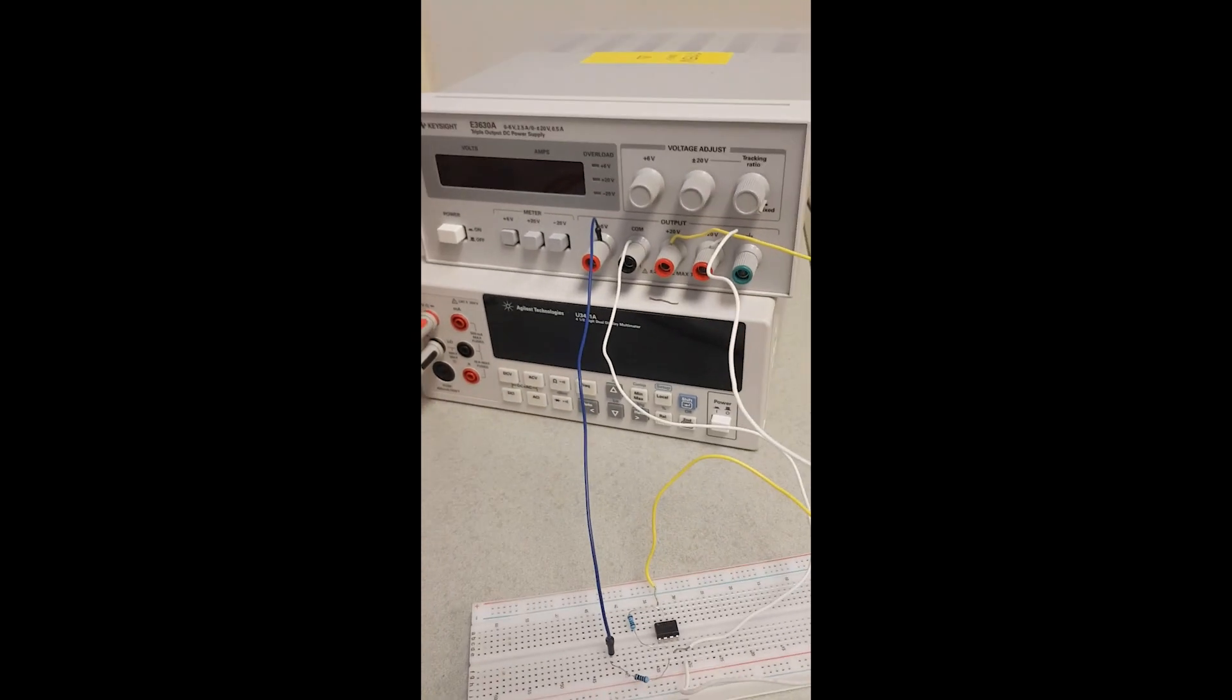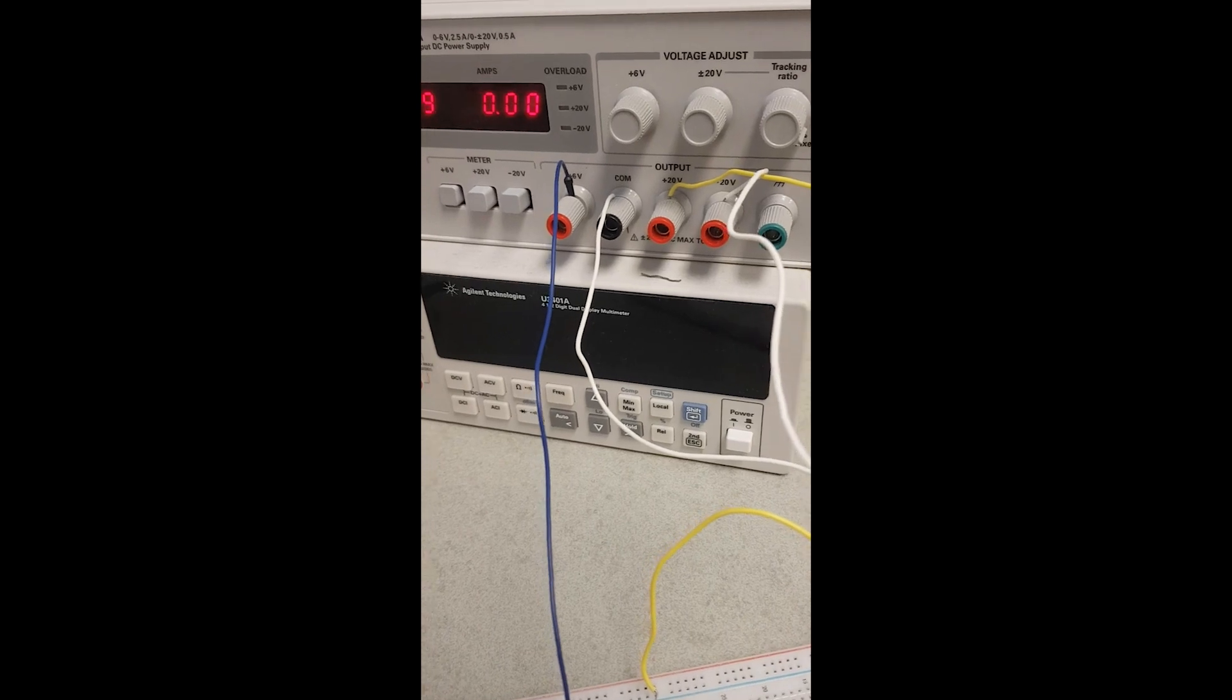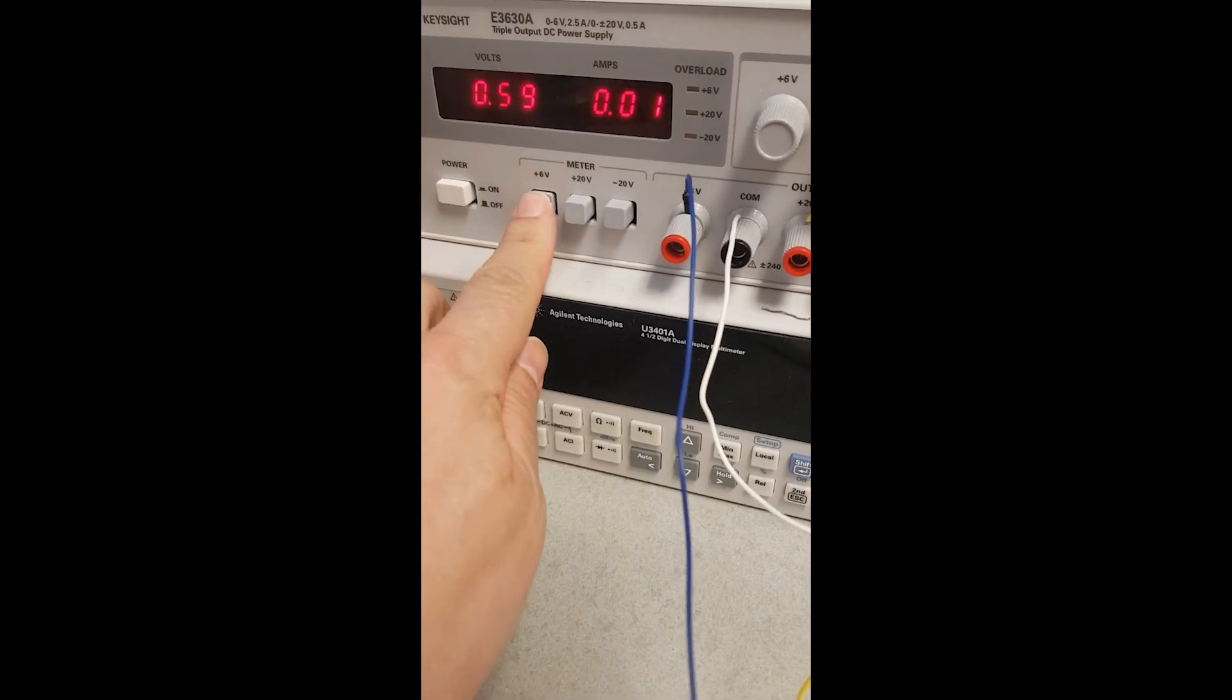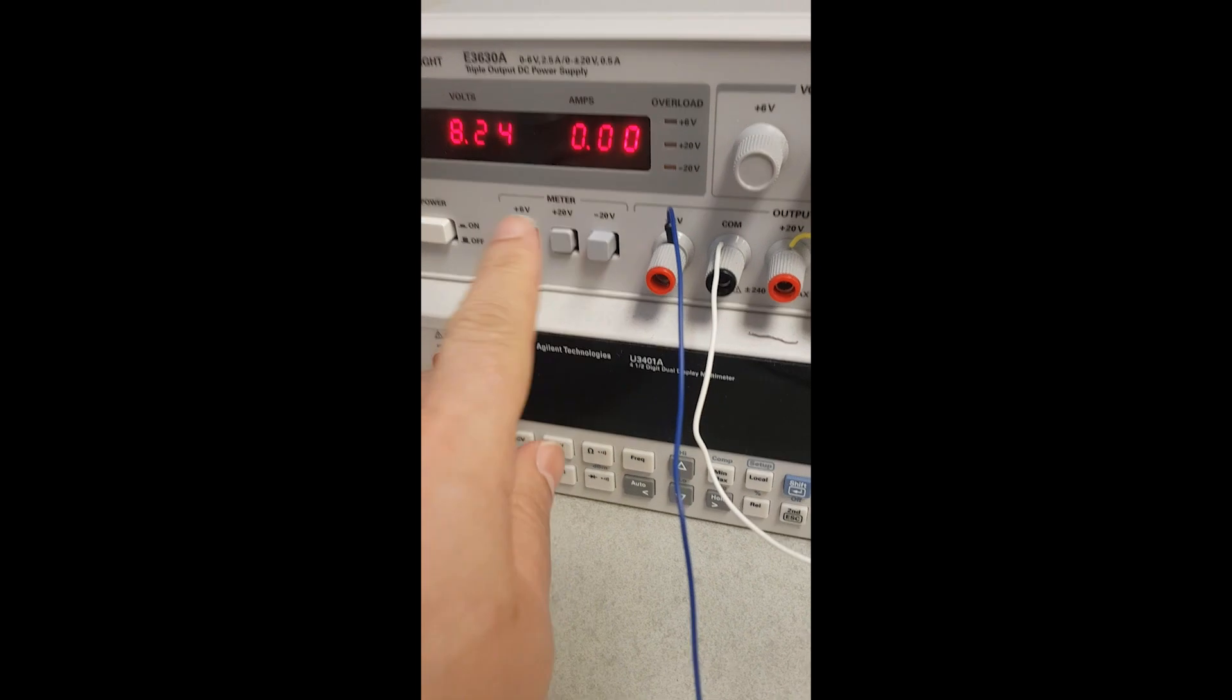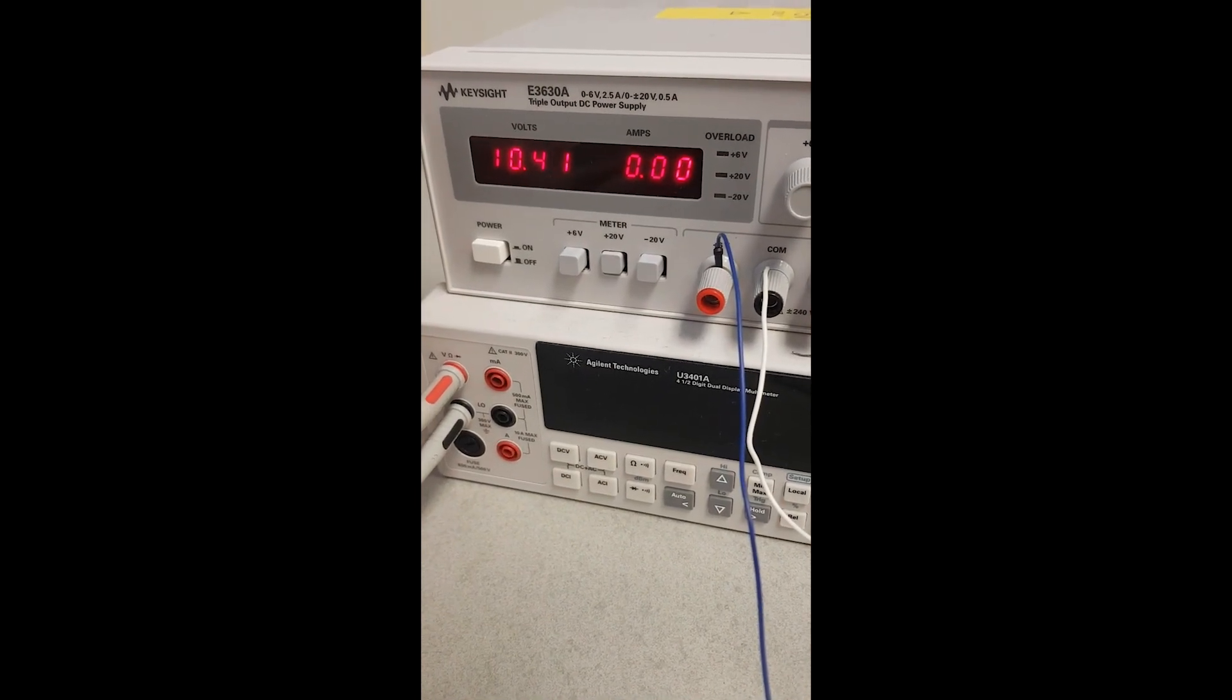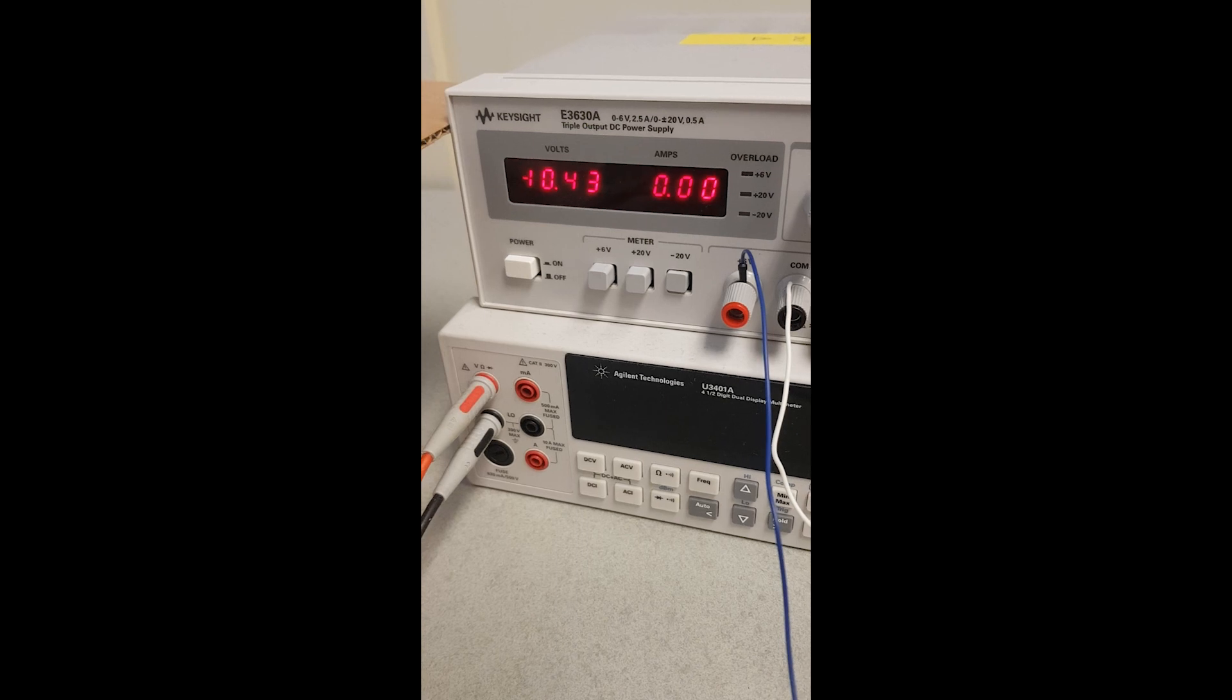And point number 7 is connected to the positive DC supply. This is my DC supply. So if I turn it on here, you will have four outputs. This is the output for the 6 volt. Now, if I select 6, so we have around 0.59, 0.6 volt. If I select the 20, this is the bias around 10.4 plus DC. If I select the negative, we have minus 10.4.